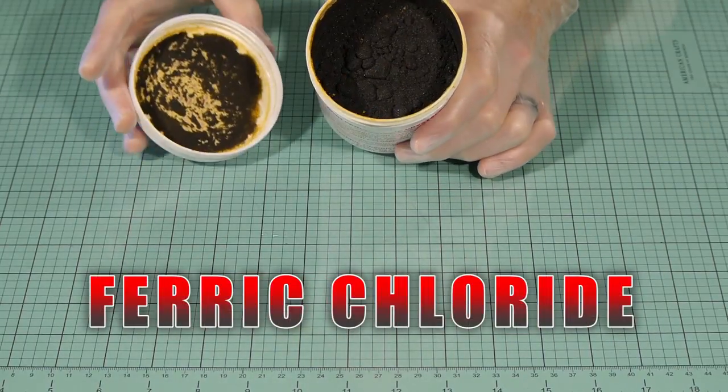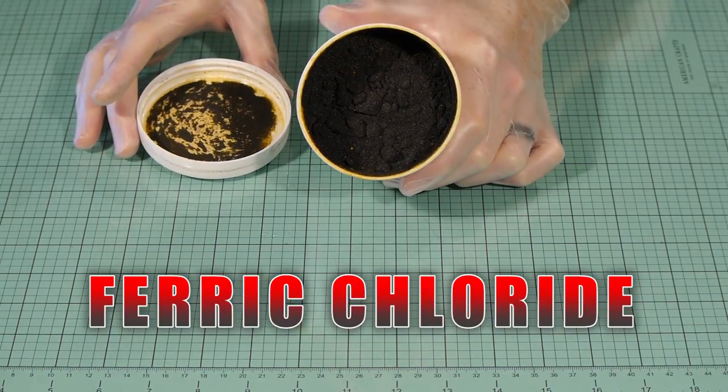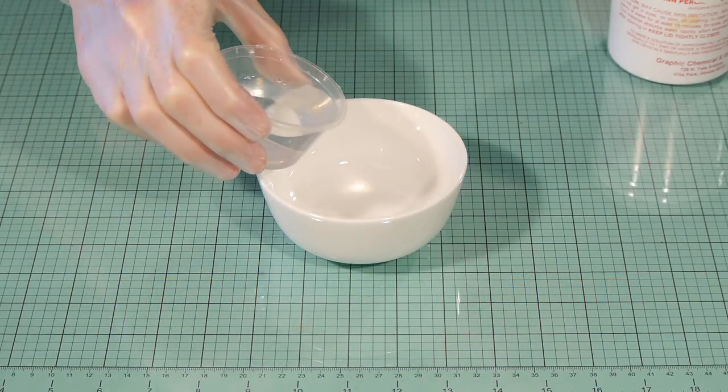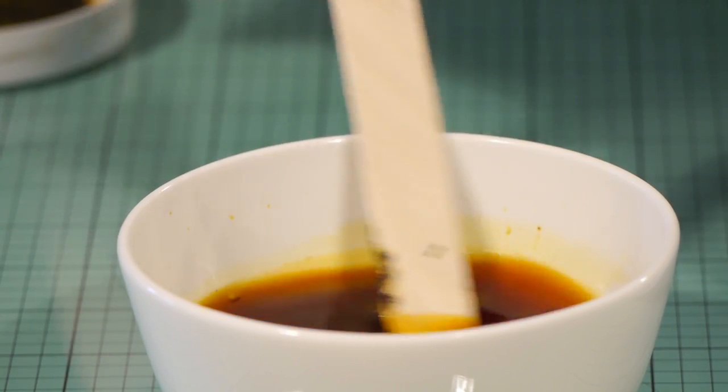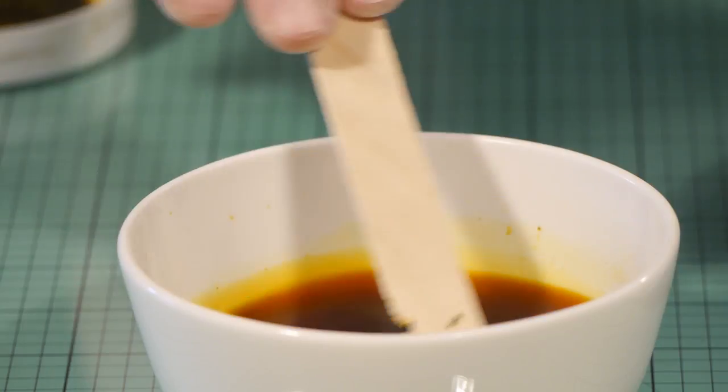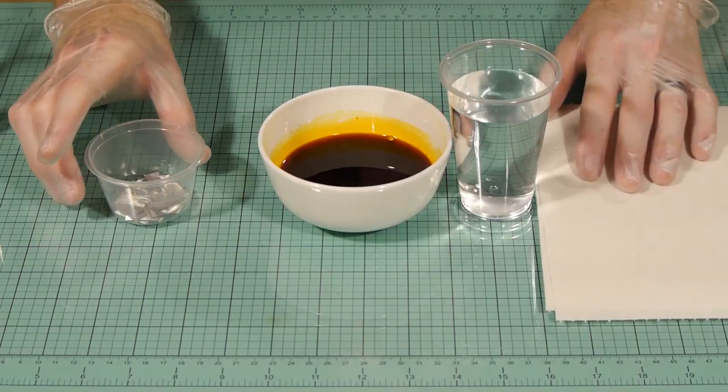This is ferric chloride and it's a chemical used for etching PCB boards. It's highly corrosive and will burn skin. It does a great job of simulating rusted out corrugated iron sheets as you'll see. This stuff gets extremely hot when mixing it as well.